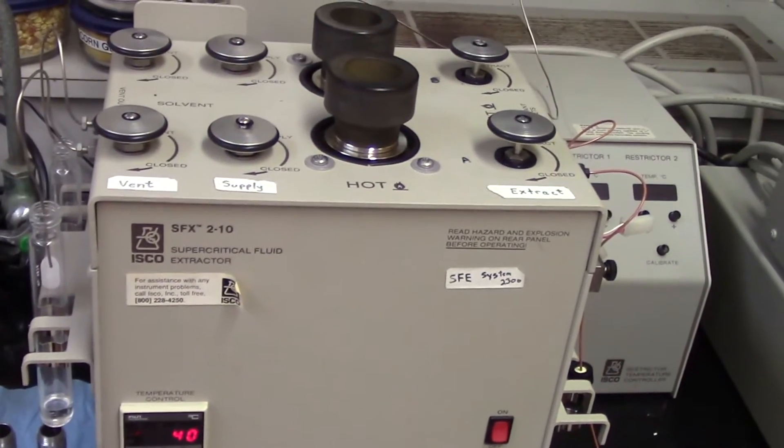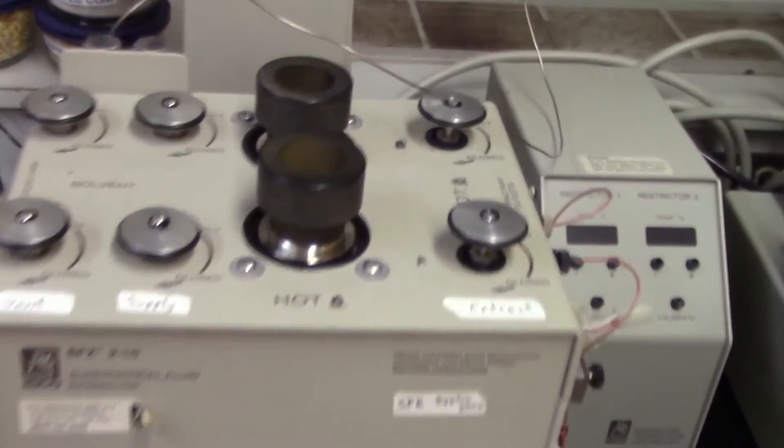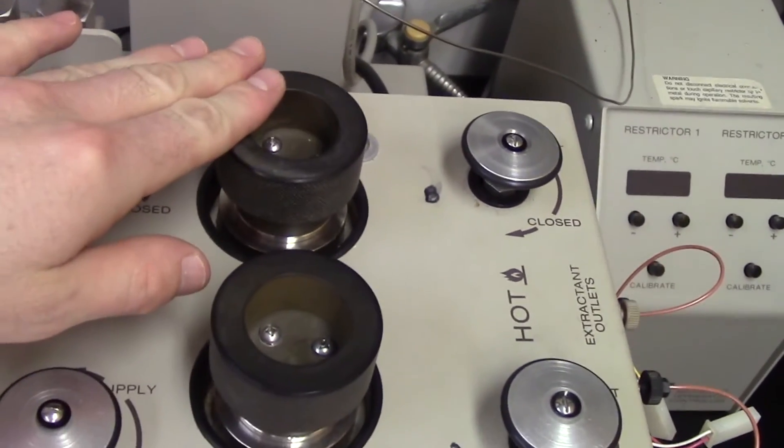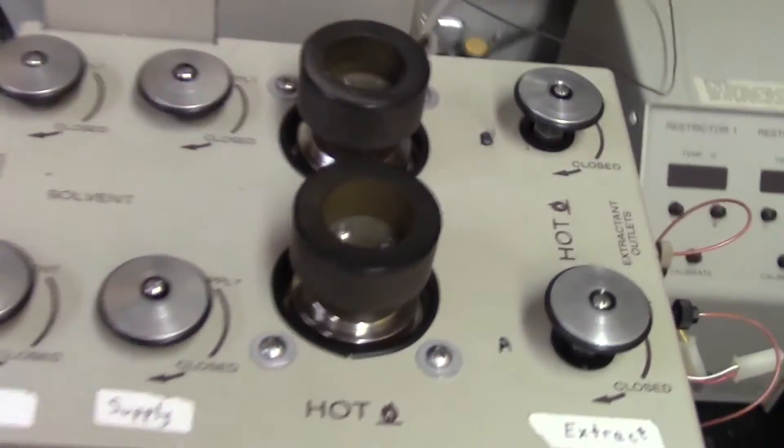Regardless of the type of extraction you do, your raw ingredient that is being used for extraction must first be added to either or both of the extraction chambers in the extraction unit.